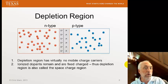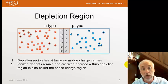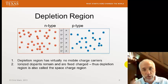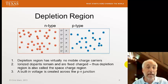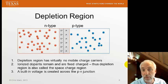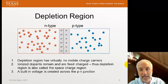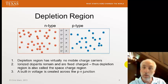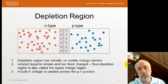Because the ionized dopants are spatially separated — positive charges on the N-type side, negative charges on the P-type side — there is a voltage across the depletion region. We call it the built-in voltage across the P-N junction.